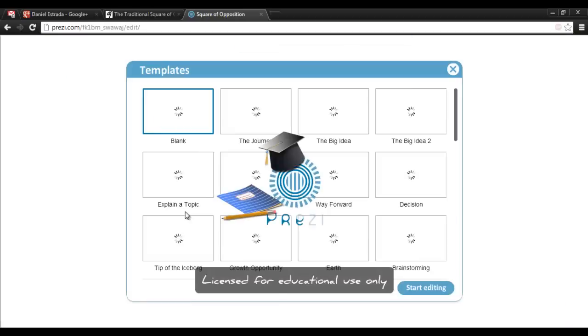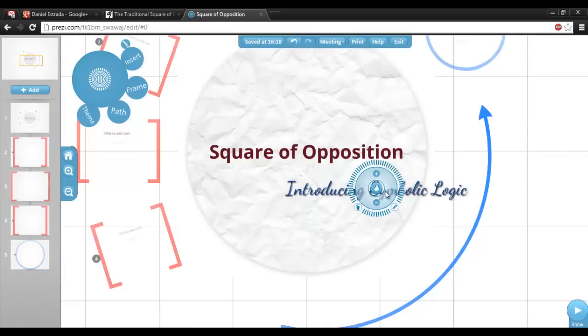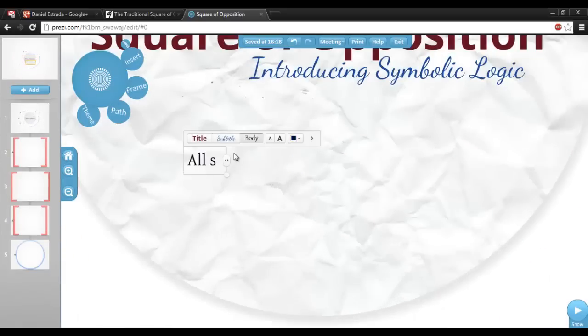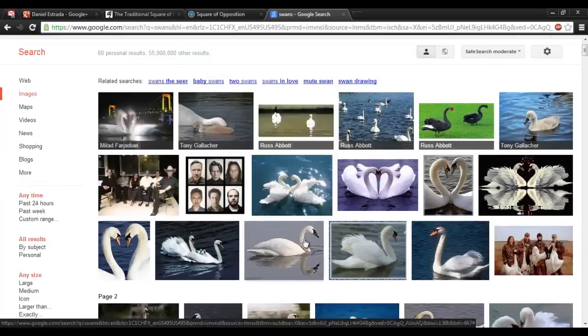In this video we will look at the square of opposition. This is the second video in a series introducing symbolic logic. Consider the sentence all swans are white. This is a categorical proposition because it expresses a relationship between two categories of things, swans and white things.